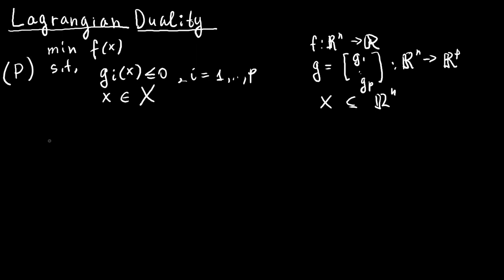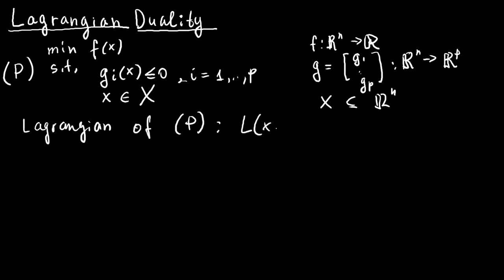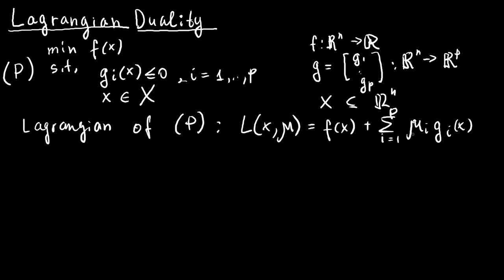Next we'll write the Lagrangian of P. L(x, μ) equals f(x) plus the summation of μ_i times g_i(x) for i between 1 and p. We consider the Lagrangian for μ ≥ 0 and x in the set X. Essentially, we moved the inequality constraints into the objective with some non-negative multipliers μ_i.